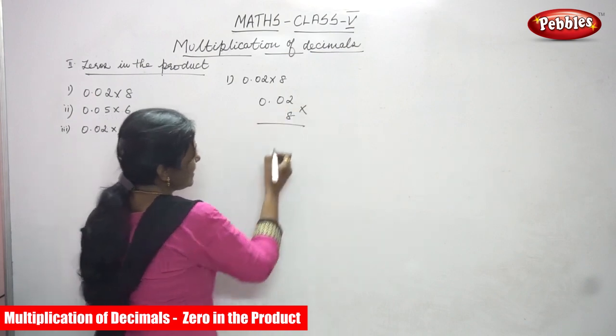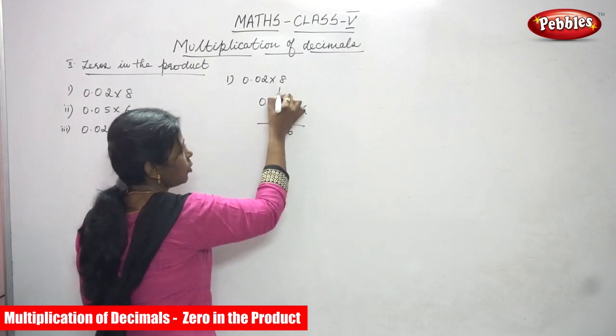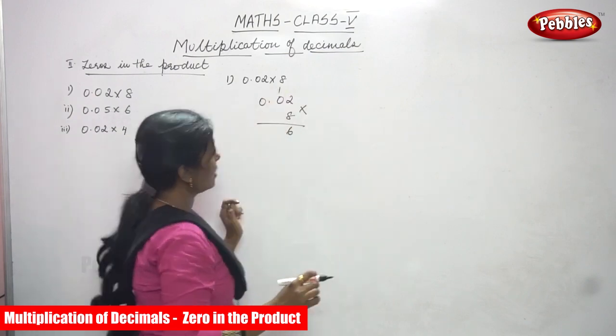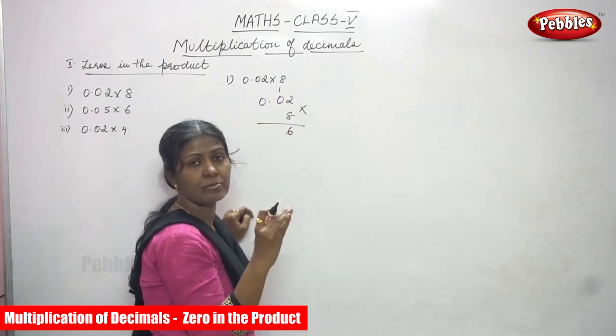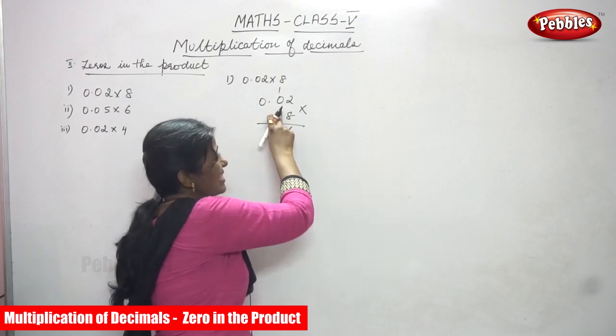8 twos are 16. 6, the remaining is carry over to go to the 10th place. So first we are going to multiply the 100th place. 100th, that means after the point we can call it as first one is 10th, the next one is 100th place.